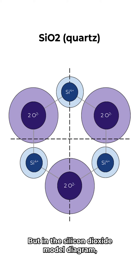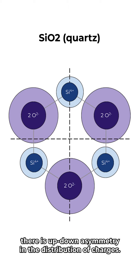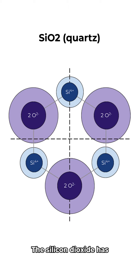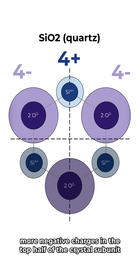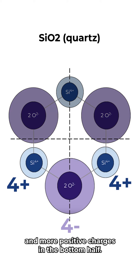But in the silicon dioxide model diagram, there is up-down asymmetry in the distribution of charges. The silicon dioxide has more negative charges in the top half of the crystal subunit and more positive charges in the bottom half.